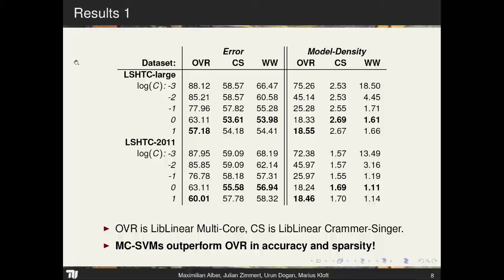For results, we trained on large-scale text data from the LSHTC repository — bag-of-words data, high-dimensional but sparse. We show two results: one on the large LSHTC dataset and one on LSHTC 2011, the biggest multi-class dataset available, with 400,000 samples and 30,000 classes. All-in-one support vector machines outperform one-versus-rest by up to 5% accuracy, and the model density is up to an order of magnitude lower — your final model can be ten times smaller.